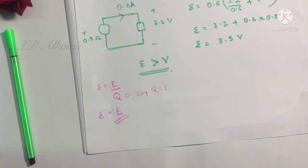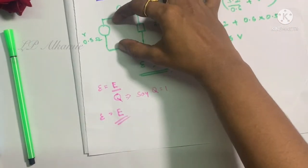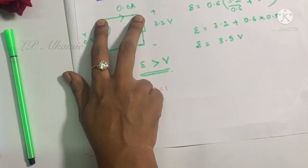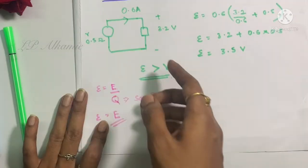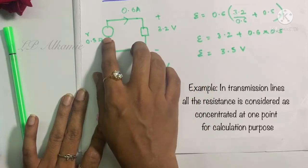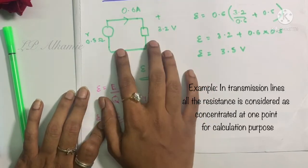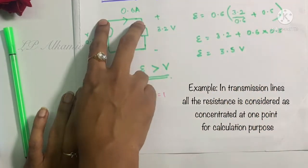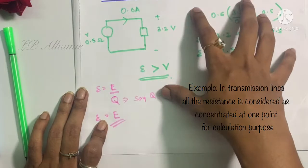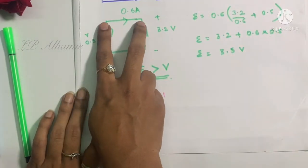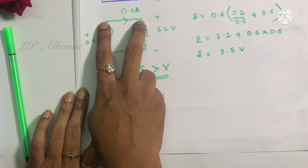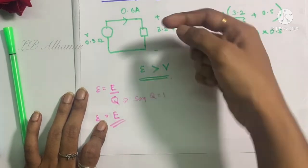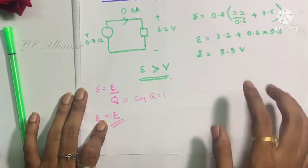If you consider one coulomb of charge, the EMF equals the amount of energy provided by the battery for each coulomb of charge passing through it. Whereas voltage is just the potential difference between any two points — it could be here, here, or anywhere. You can even measure the potential difference across two points on a wire, which might give zero, because the resistance is distributed along the length but for calculation purposes we consider the wire to have no resistance.